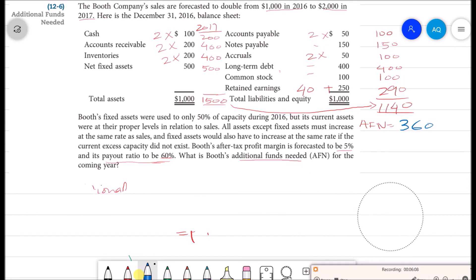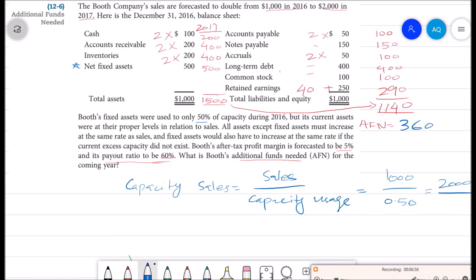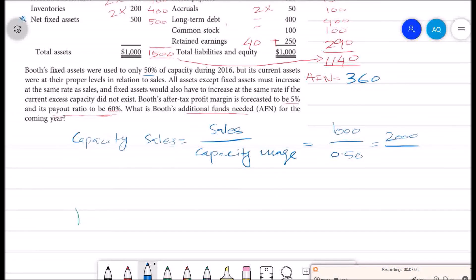There is another way to calculate this for fixed assets. So first of all, we need to check what is our capacity of sales. We can calculate our capacity by dividing sales with capacity usage. So our current sales are $1,000 and we are using only 50% capacity. It means with the current capacity we can generate $2,000 of sales, so we can utilize only our current capacity to generate 2017 sales.